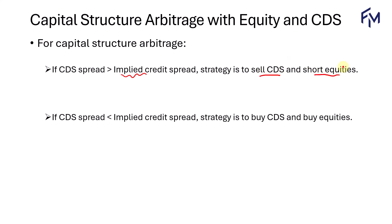The logic is about the same as for CDS and bonds — we expect the mispricing to converge to zero. For example, if the CDS spread is 300 basis points and the implied credit spread is 200 basis points, we'll expect the CDS spread to decline and the implied credit spread to increase. When the CDS spread declines, the seller of the CDS benefits, so we sell CDS. When the implied credit spread increases, we expect the equity value to drop, meaning equity is overvalued, so we short equities.